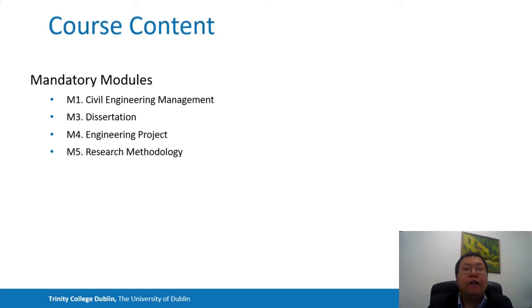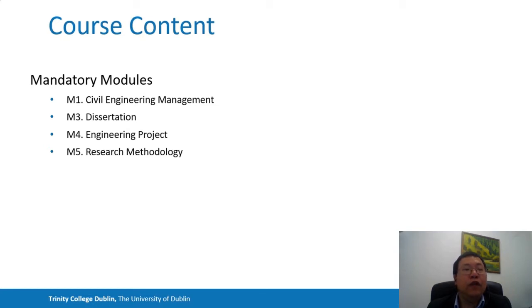The M5 research method module covers topics such as research philosophies in engineering, research and academia, research goals and problems, characteristics of good research and choice of research topics, software training, and report writing and presentation. The module also covers the components of a research proposal, literature review, research strategy, research ethics, and research access.